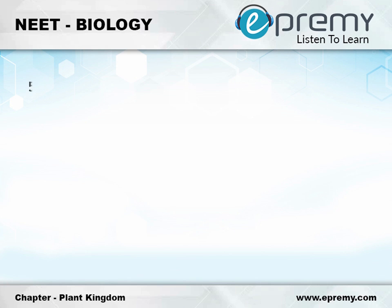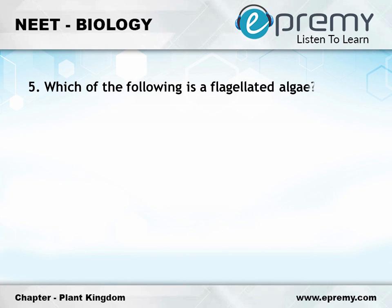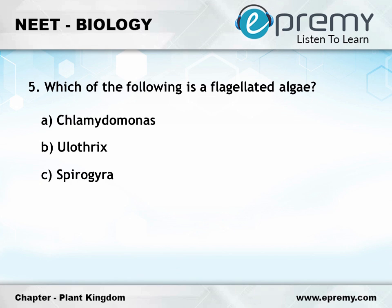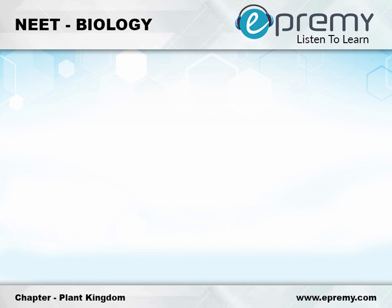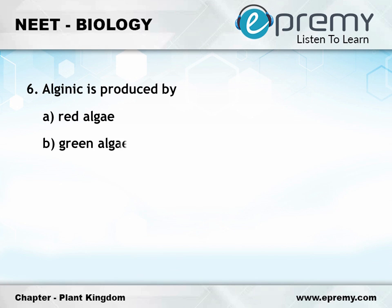Question number five: which of the following is a flagellated alga? Option A Chlamydomonas. Question number six: alginic acid is produced by option A red algae, option B green algae, option C blue-green algae, option D brown algae.